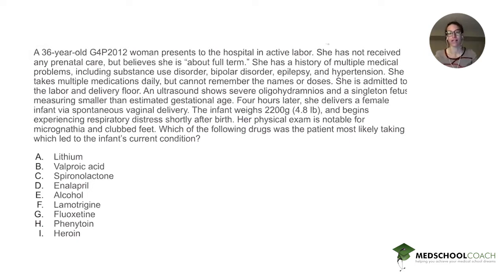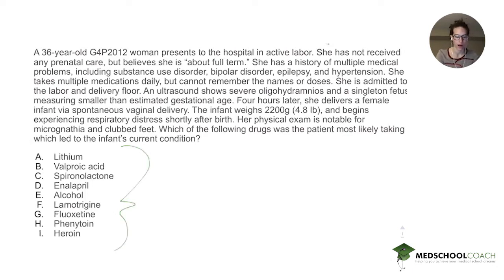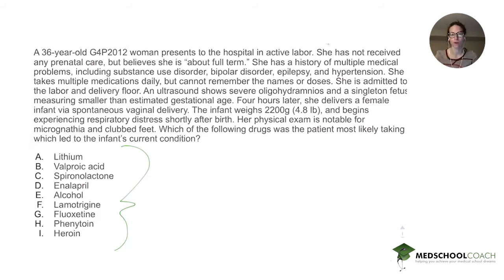This is a pretty classic question in that it's very complicated and you get a lot of information, so you have to distill down what's going on. The baby has something wrong with it, and we're being told it was probably caused by some substance the mother was taking. We know the mother's medical history: substance use, bipolar disorder, epilepsy, hypertension. In our answers we have mood stabilizers, anti-epileptics, antidepressants, drugs of abuse, and anti-hypertensives — all could be medications she's on. The question tells us the cause is medication-related, not the underlying medical problems. So the mother's medical problems are just there to distract us.